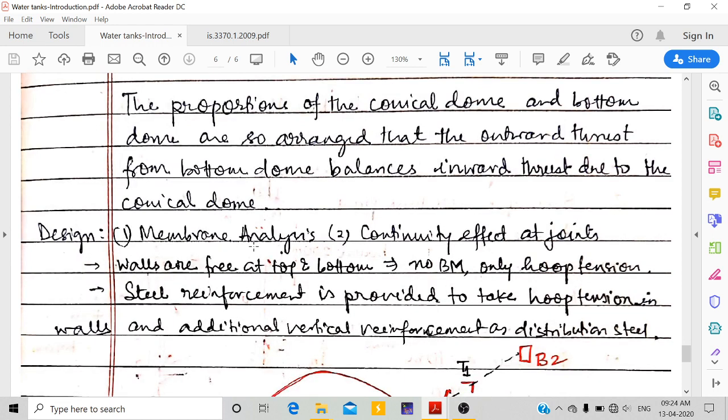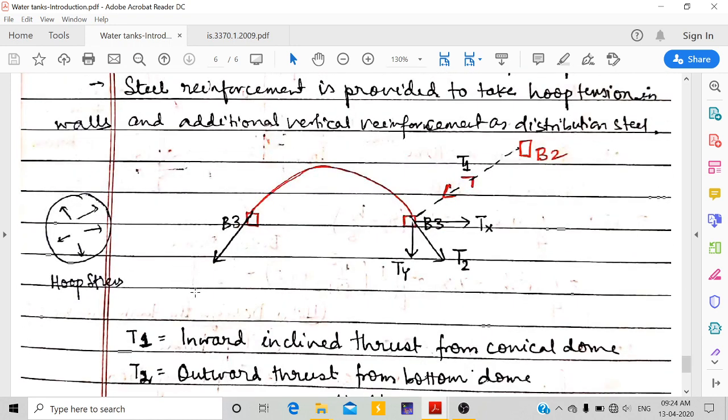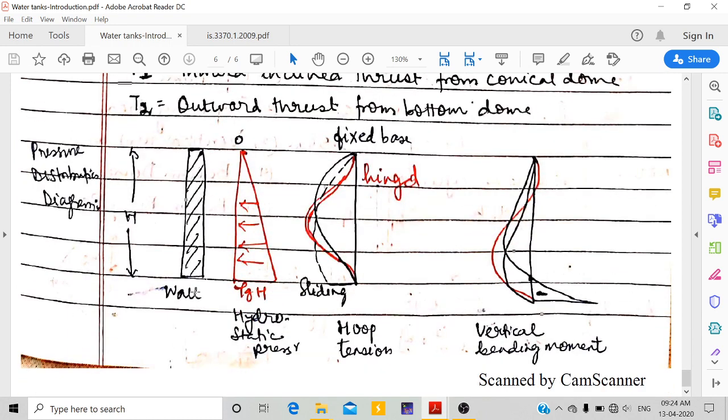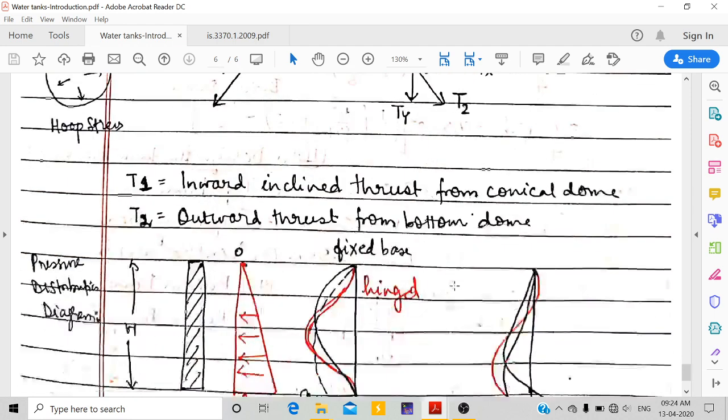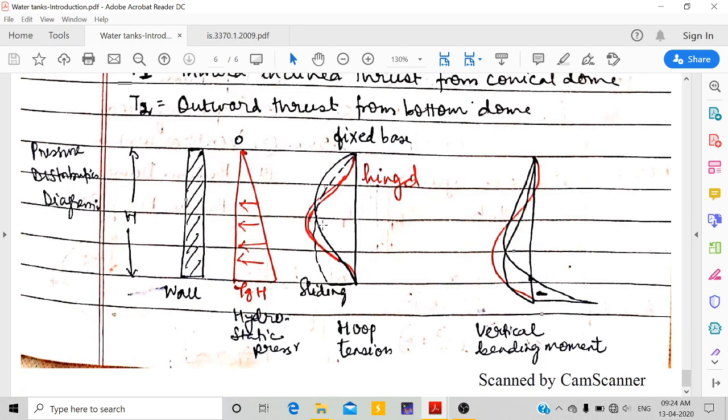Now in design we have membrane analysis and continuity effect of joints. This is the wall, and I have drawn the pressure distribution diagram. This is the hydrostatic pressure ρgh. If this is the hoop tension, the hoop stress due to Tx - this will be for fixed base in black, for hinged is red color, and sliding is the dotted one. This is the vertical bending moment diagram. Thank you for watching.